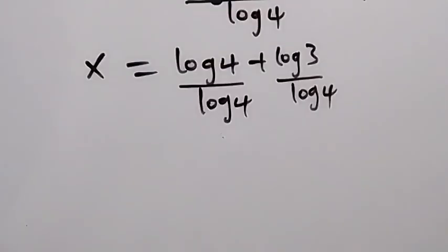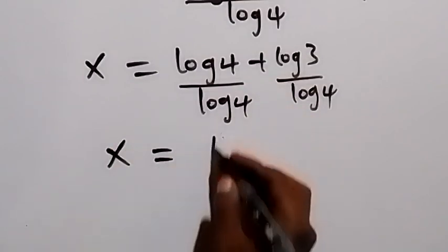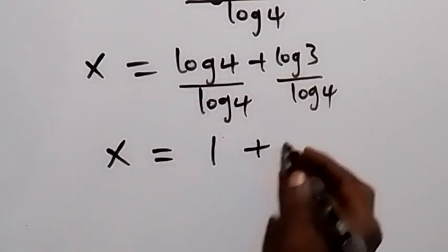Then log 4 divided by log 4 will give us 1. So here we have 1, then x is now equals to 1 plus log 3 over log 4.